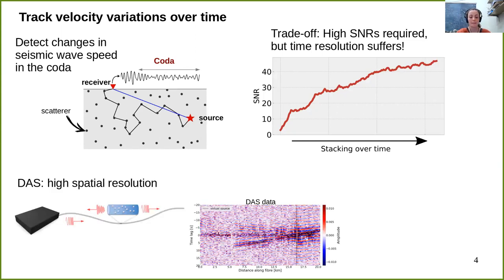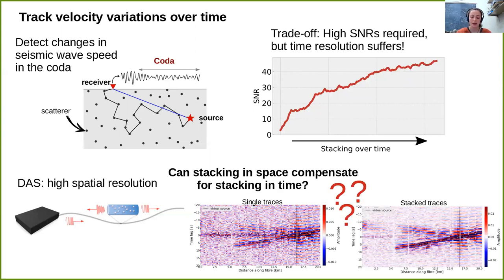Distributed fiber acoustic sensing, or DAS, is a relatively new method based on Rayleigh scattering of photons in a fiber optic cable. Compared to even very dense conventional seismometer arrays, DAS provides an incredibly high spatial resolution, which lies often in the sub-range of the wavelengths we are interested in. In terms of ambient noise monitoring studies, we were wondering what could DAS add as a new contribution. Could we make use of the high spatial resolution by stacking the data not only in time but also in space, and can this even compensate for temporal stacking to increase the time resolution of our measurements?